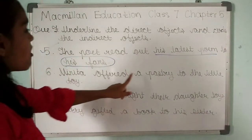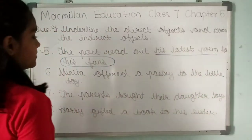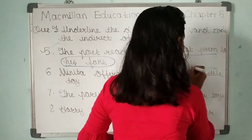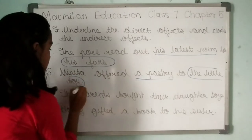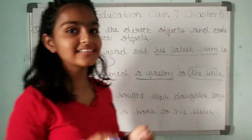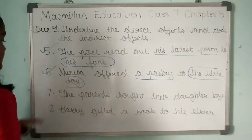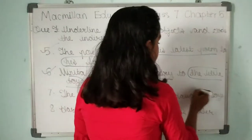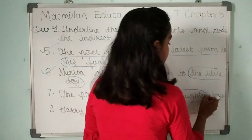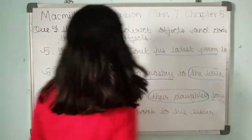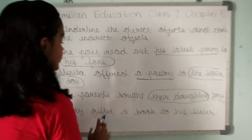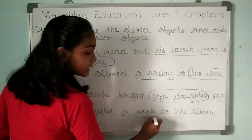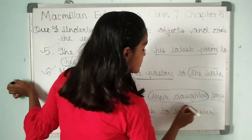Question six: 'Vinita offered a pastry to the little boy.' Here, 'a pastry' is the direct object and 'the little boy' is the indirect object. Question seven: 'The parents bought their daughter toys.' 'Their daughter' is the indirect object and 'toys' is the direct object. Question eight: 'Harry gifted a book to his sister.' 'A book' is the direct object and 'his sister' is the indirect object.